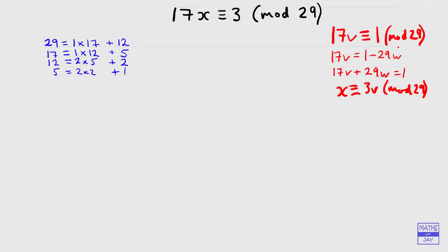And what we'll do next is rearrange each line so that we make the remainder the subject. So looking at the first line the remainder is 12, so let's just keep it simple and write 29 minus 17, no need to write in the 1 there. And then the remainder in the next line is 5. And we can see that 5 is 17 minus 12. And then we've got 2 equal to 12 minus 2 times 5. And finally 1 is 5 minus 2 times 2. So if you're unsure of any of these you can always check them. So for example, looking at the third line, 12 minus 2 times 5, well that's 12 minus 10 and that is 2. So you can always check the arithmetic as you go along.